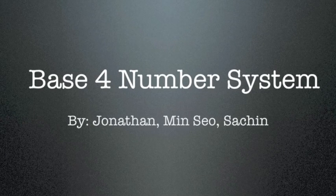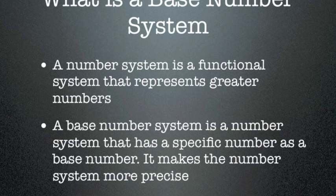Base for a number system, by Jonathan Minso and Satin. What is a base number system? A number system is a functional system that represents greater numbers. A base number system is a number system that has a specific number as a base — it makes a number system more precise.